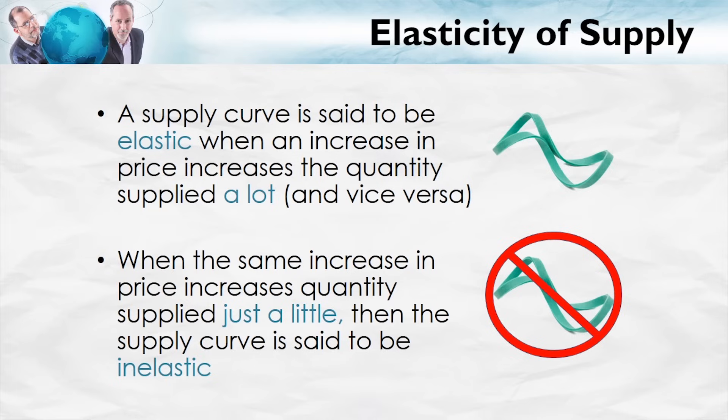When the same increase in price increases the quantity supplied by just a little, the supply curve is said to be inelastic. So when the quantity supplied doesn't vary very much with the price, the supply curve is inelastic.